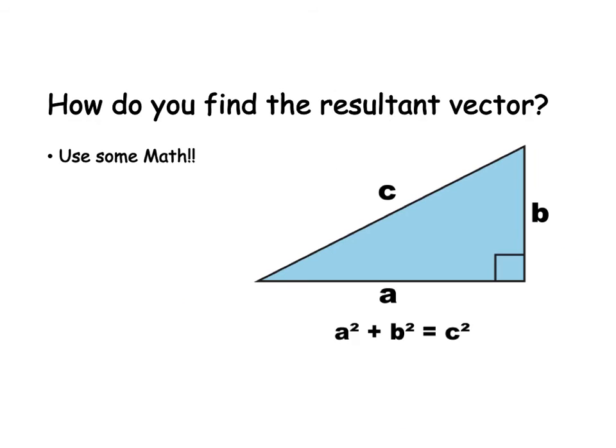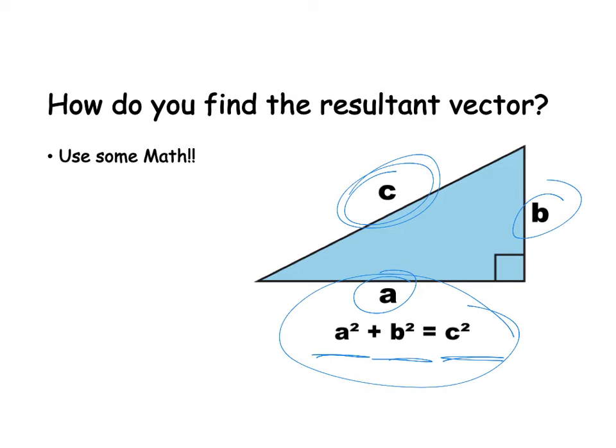Alright, what if you know the x and the y value and you want to find the hypotenuse? We got to use the Pythagorean theorem. So a squared plus b squared equals c squared. So use a little bit of math and that will help you find the hypotenuse. So say these are our vectors right here. Then this is our hypotenuse. It's going to tell us the displacement.